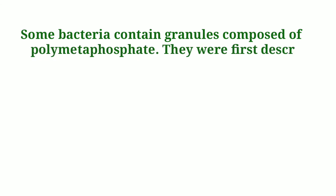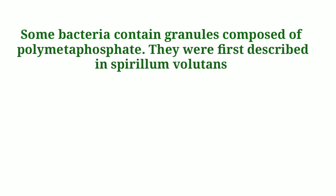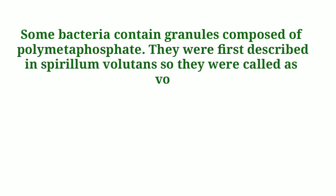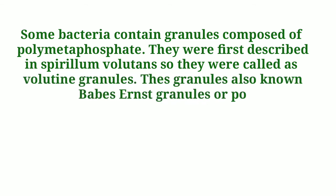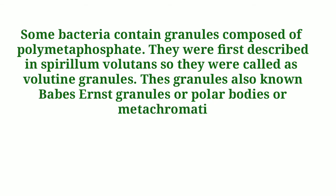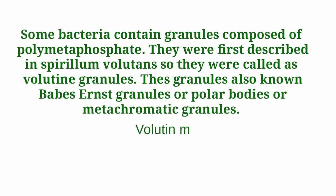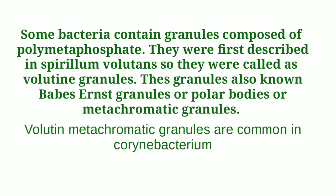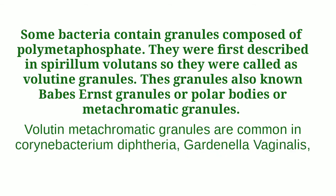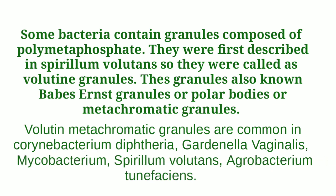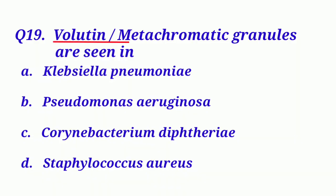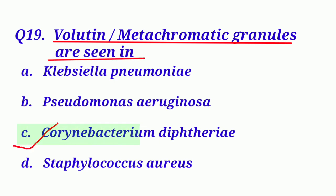They were first described in Spirillum volutans, so they were called volutin granules. These granules are also known as Babes-Ernst granules, polar bodies, or metachromatic granules. Volutin metachromatic granules are common in Corynebacterium diphtheriae, Gardnerella vaginalis, Mycobacterium, Spirillum volutans, and Agrobacterium tumefaciens. So our correct option is Option C: Corynebacterium diphtheriae.